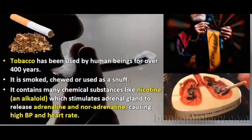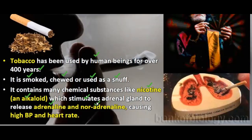Next we have smoking. Tobacco has been used by human beings for over 400 years. It is smoked, chewed, or used as snuff. It contains many chemical substances like nicotine. Nicotine is an alkaloid which stimulates the adrenal gland to release adrenaline or noradrenaline, which causes high blood pressure and high heart rate.